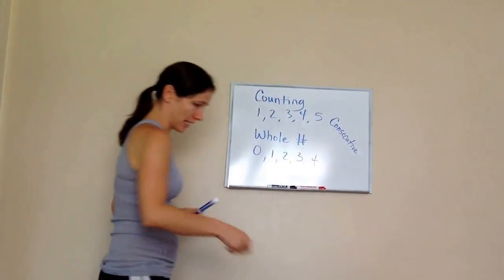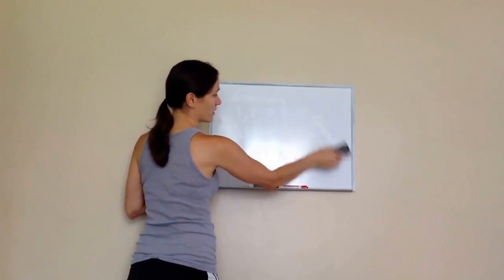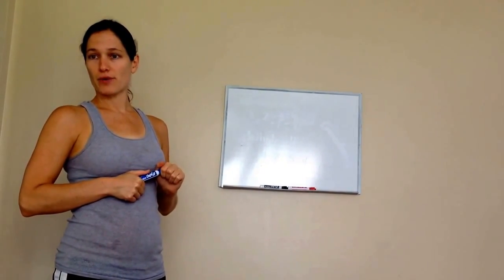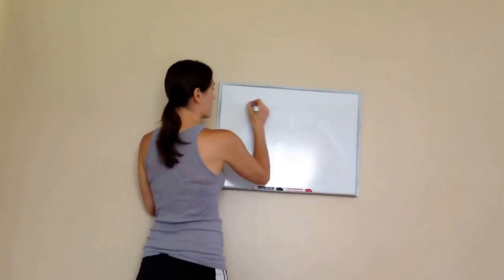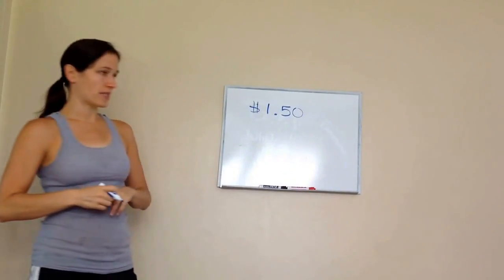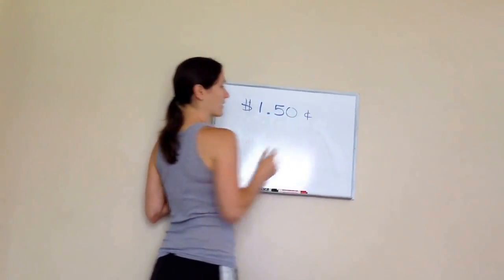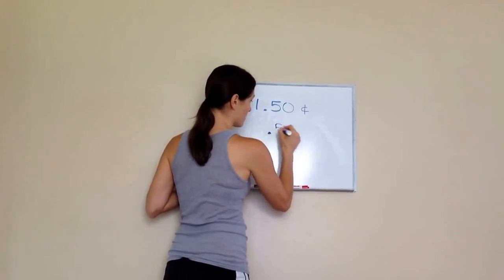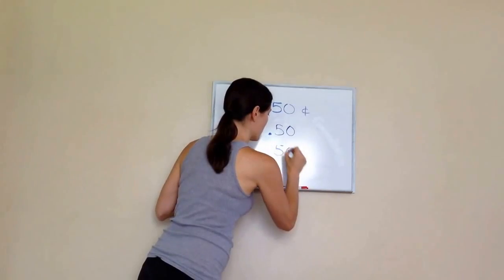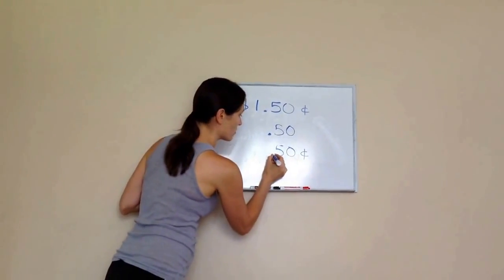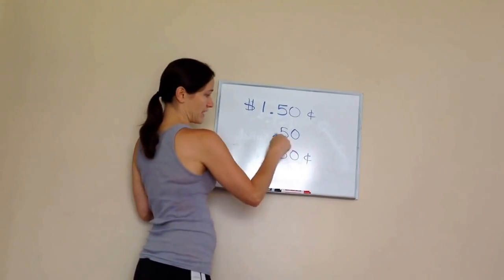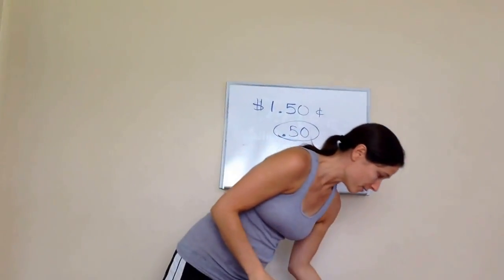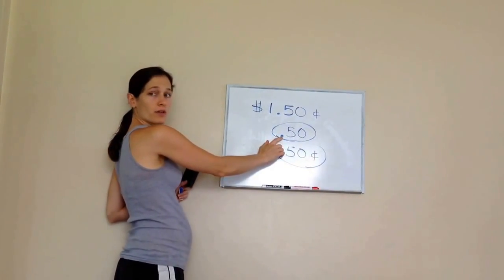The next thing I want to talk about is money. Oftentimes with money, we see it written in two different ways. One way is using a dollar sign — so if I were to write $1.50, that's how you would see it. But it would be incorrect to put a dollar sign and a cent sign together. You could write 50 cents with a cent symbol, or you could write $0.50, but you would not put a decimal and a cent sign together — never both. Do you remember what this decimal symbol is called? Decimal point. Good job.